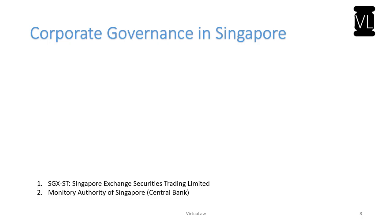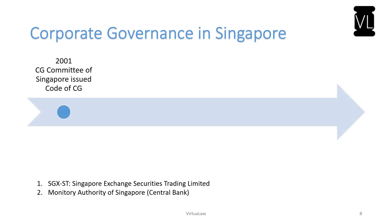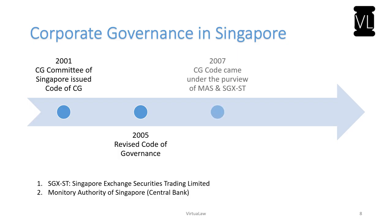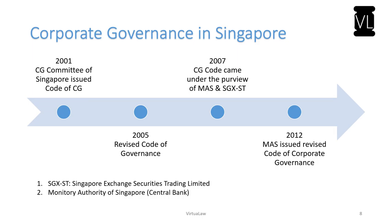In Singapore, the evolution of corporate governance began in 2001 when the Corporate Governance Committee issued a Code of Corporate Governance, which was further revised in 2005. In 2007, corporate governance came under the purview of MAS — the Monetary Authority of Singapore, which is Singapore's central bank — as well as SGX-ST, the Singapore Exchange Securities Trading Limited. In 2012, the Monetary Authority of Singapore issued a revised Code of Corporate Governance.